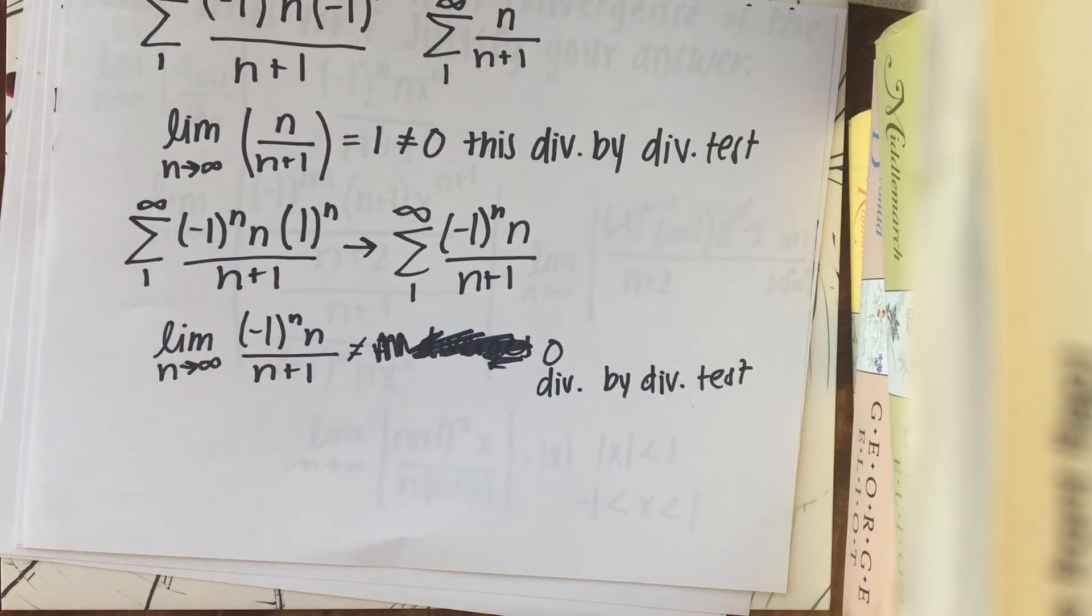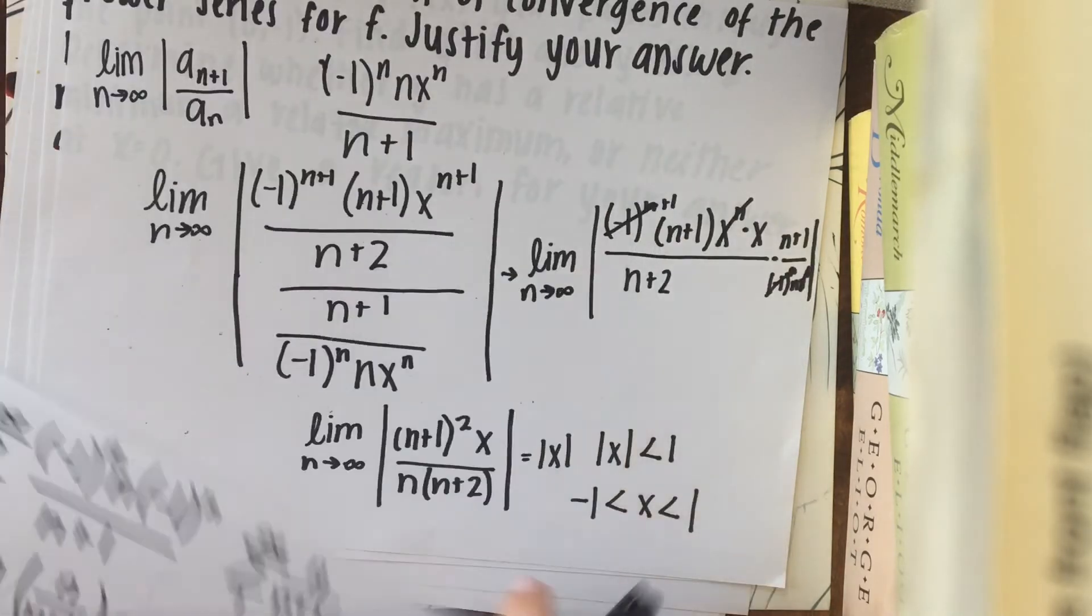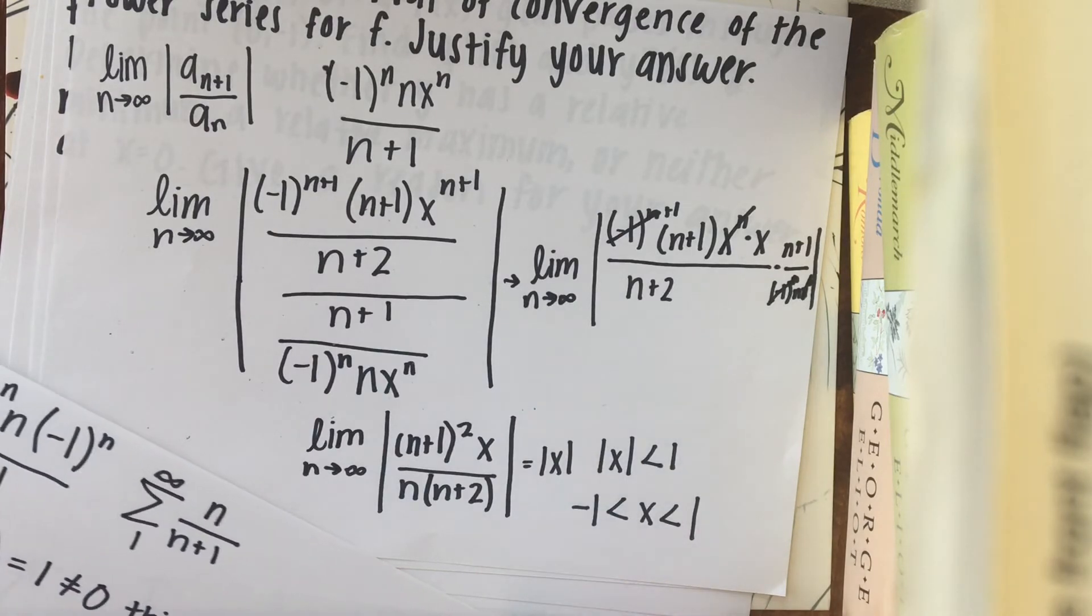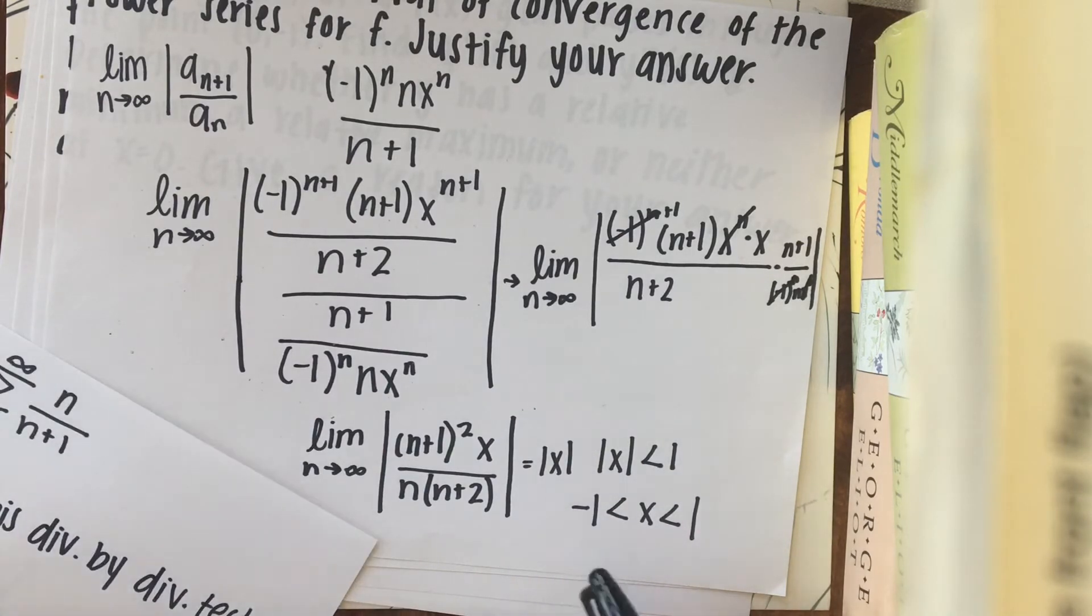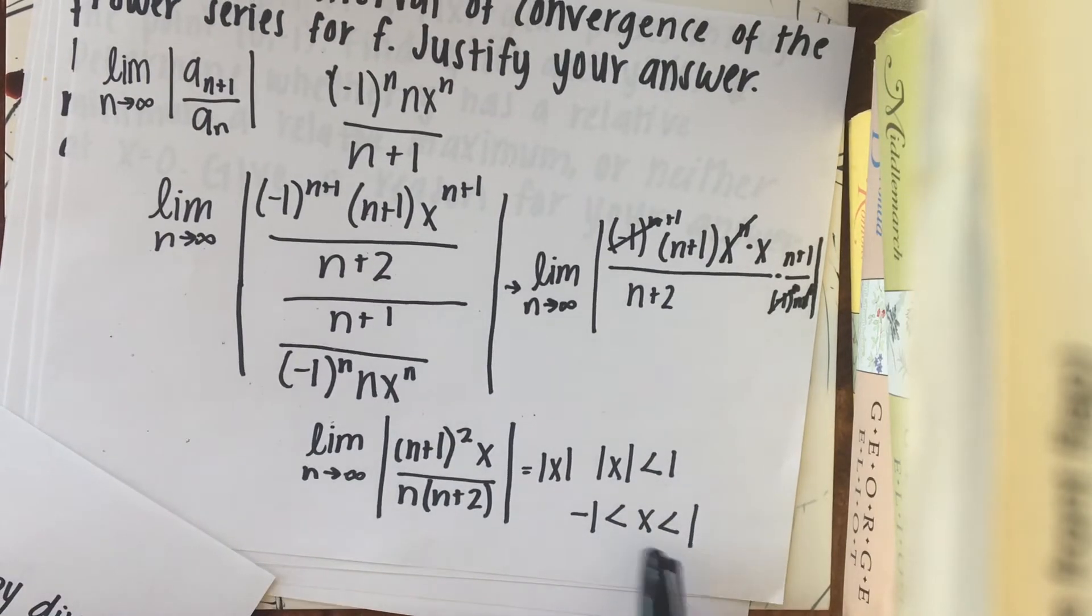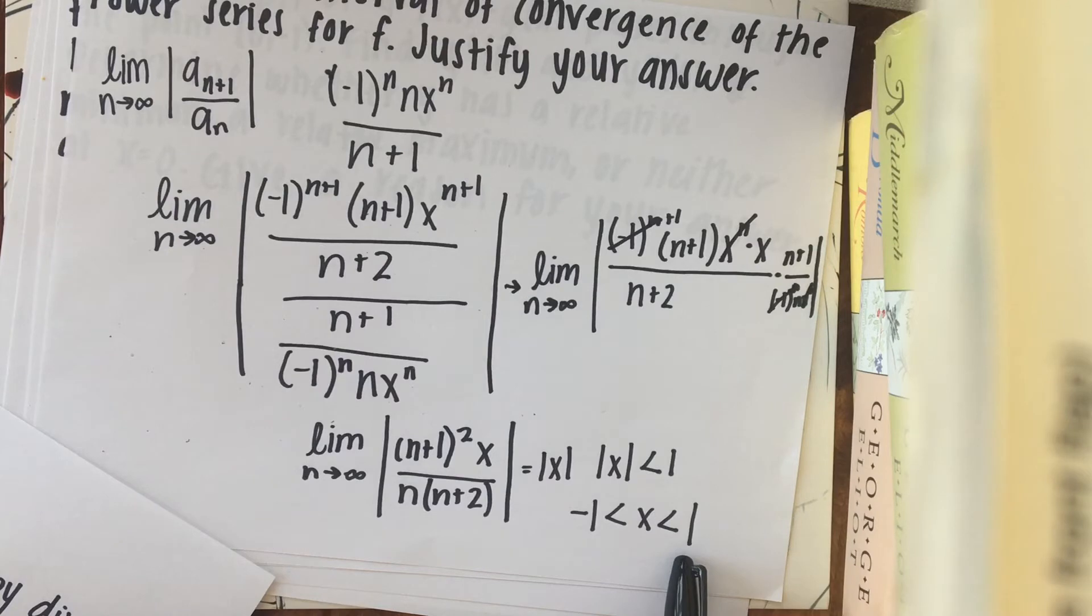Also, just an important thing is the point set up for this. You get one point for setting up this ratio. One point for computing the limit. And then you also have to identify the radius of convergence, which is 1. You have to consider both of these endpoints and then give an analysis and conclusion.